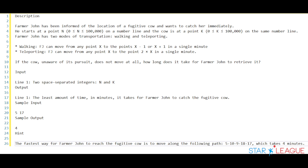Farmer John has two modes of transportation: walking and teleporting. When it comes to walking, Farmer John can move from any point X to any point X-1 or X+1 in a single minute. When it comes to teleporting, Farmer John can move from any point X to a point 2 times X in a single minute. The cow is unaware of its pursuit and does not move at all. We are trying to find out how long it takes for Farmer John to retrieve it. The input is two space-separated integers, N and K, and the output is an integer representing the least amount of time in minutes that Farmer John takes to catch the cow.